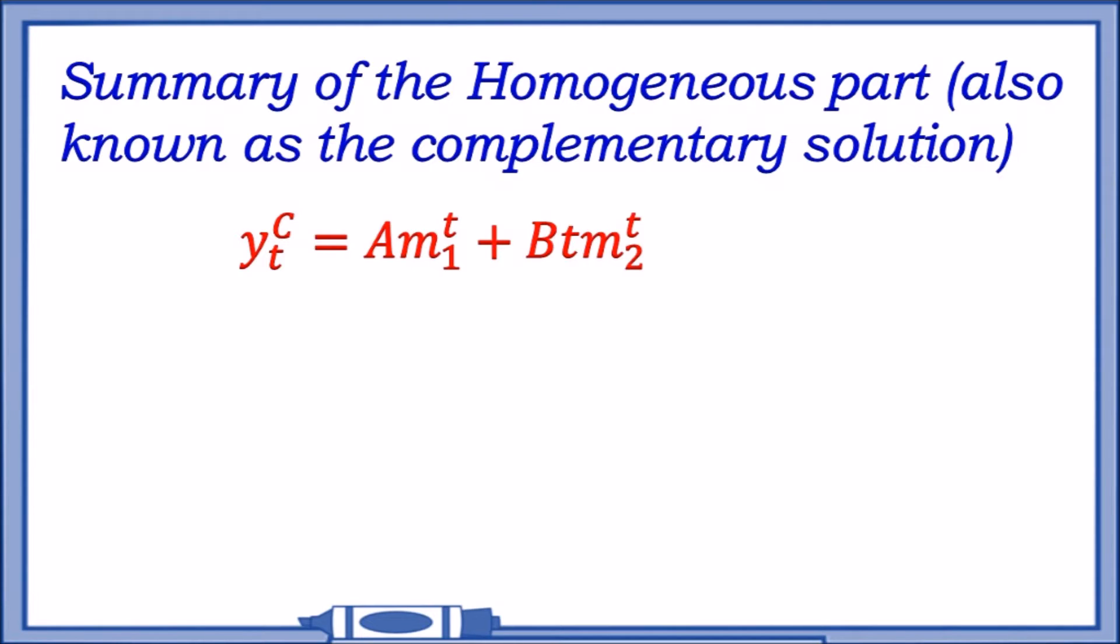It takes the form of A times m₁ to the power t plus Bt times m₂ to the power t. In this case, we stick in a t next to B because it's repeated roots. Substituting 2^t, we get this. However, there are other cases.